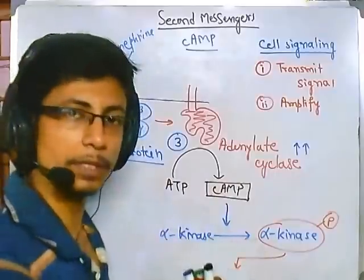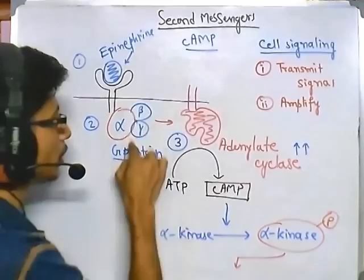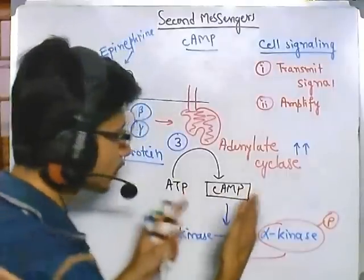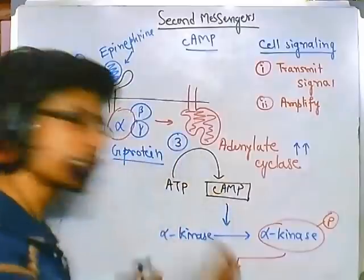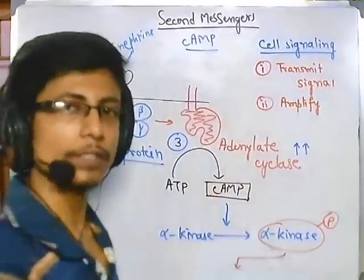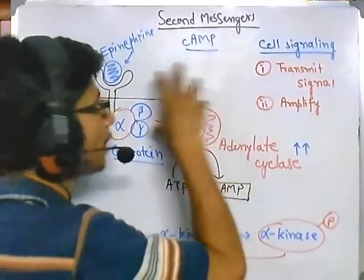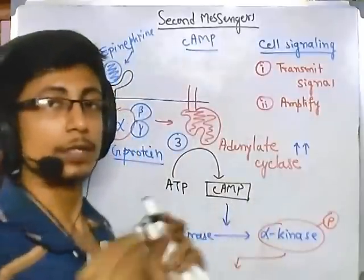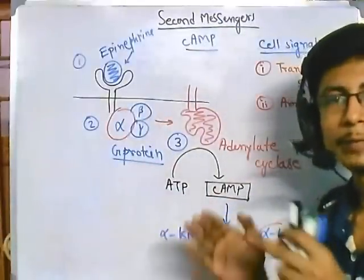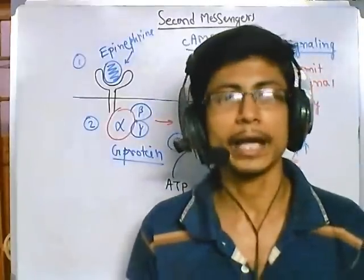Cyclic AMP, the second messenger, is soluble and can migrate from one place to another within the cytoplasm. It doesn't only activate one thing — lots of cyclic AMP are generated, and each activates more kinases, which phosphorylate more proteins, exponentially increasing the signal. This second messenger bridges membrane-bound proteins and downstream proteins, ultimately activating transcription factor proteins that enter the nucleus, bind promoter sequences, and control transcription of different proteins.